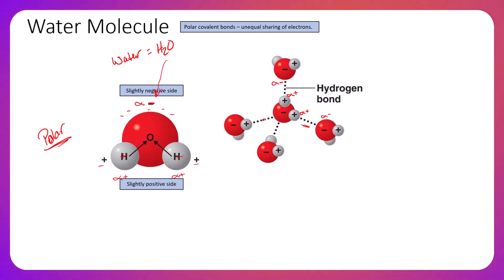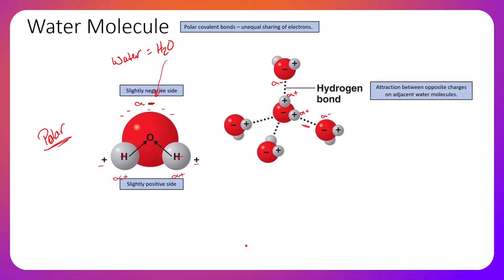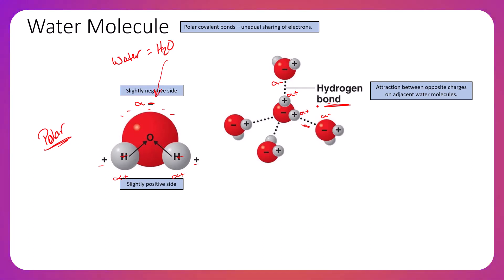We have hydrogen bonds forming here, here, here, and here. If we continue adding water molecules into this lattice, we continue adding the slightly negative oxygen side to the slightly positive hydrogen end. This attraction between opposite charges on adjacent water molecules forms hydrogen bonds, and those hydrogen bonds are critical to give water all of its properties: adhesion, cohesion, high specific heat capacity, solvency, and capillary action.